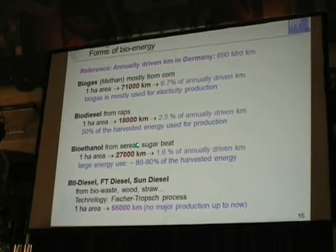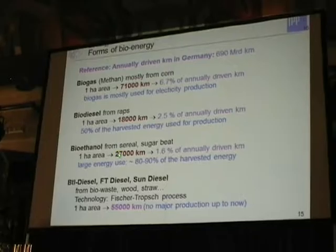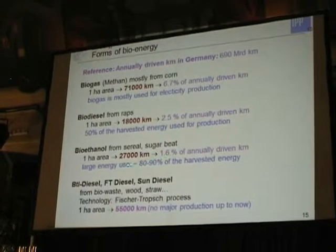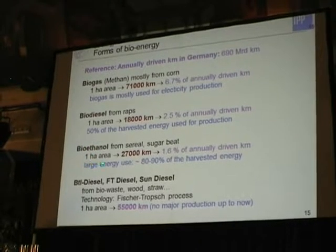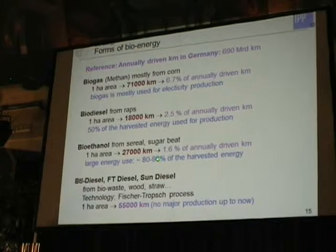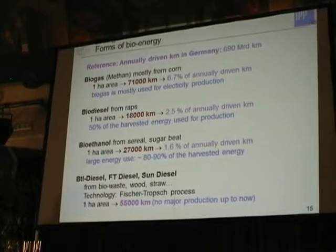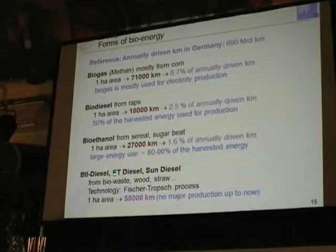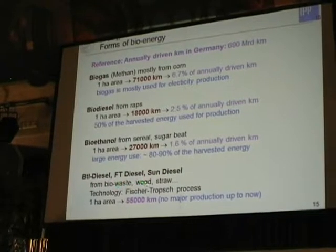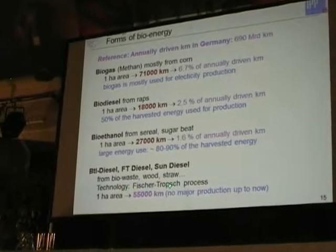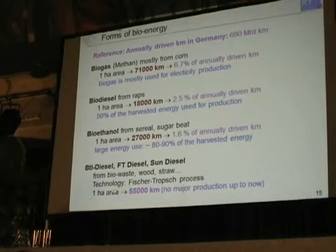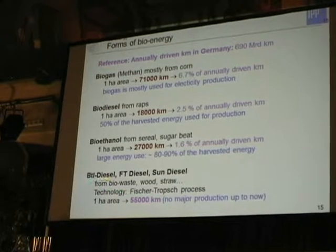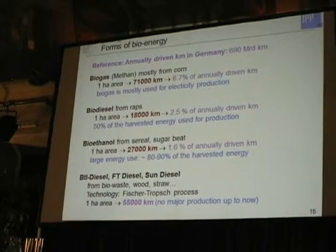Bioethanol comes from sugar beet in Germany. One hectare produces 27,000 kilometers, but it requires a large energy input — 80 to 90% of the harvested energy. It is always a gamble whether it makes it or not. Finally, BTL diesel, FT diesel — sun diesel from bio-waste such as straw and others — the technology is developed but must be improved. One hectare gives 55,000 kilometers, but Germany doesn't produce very much, so this is not a major player.